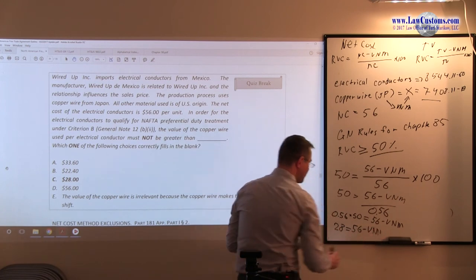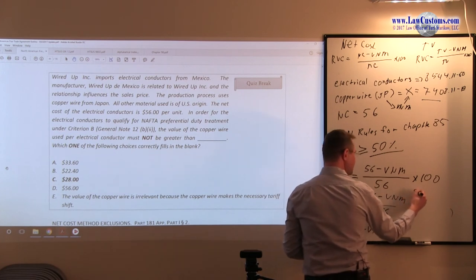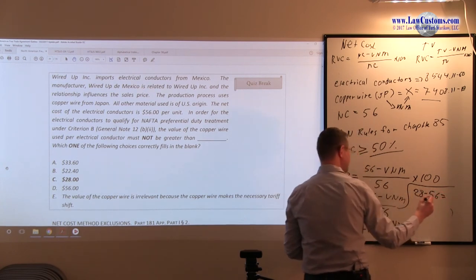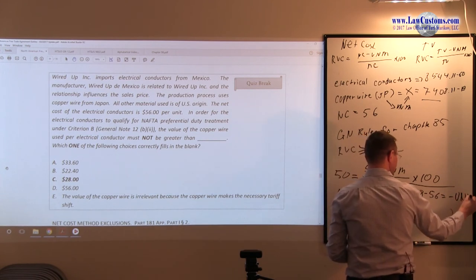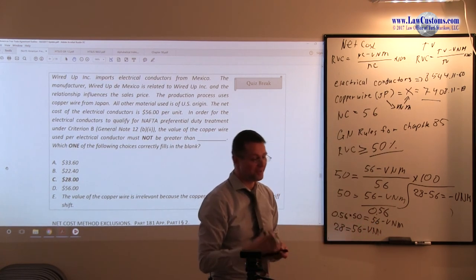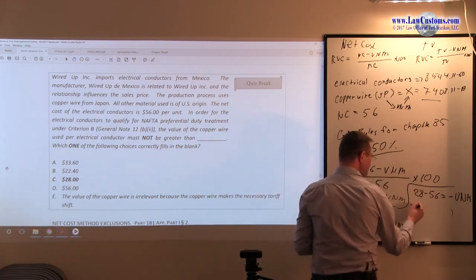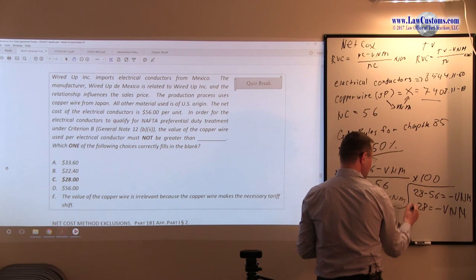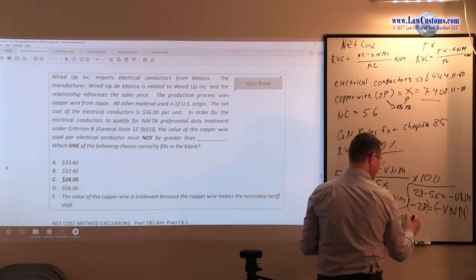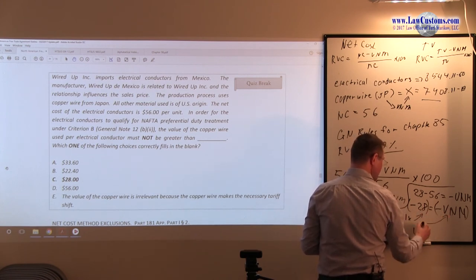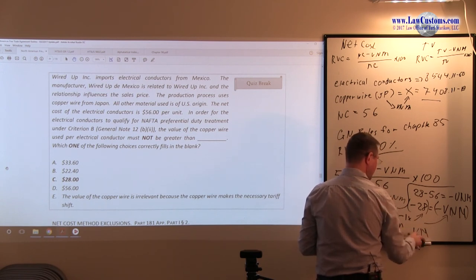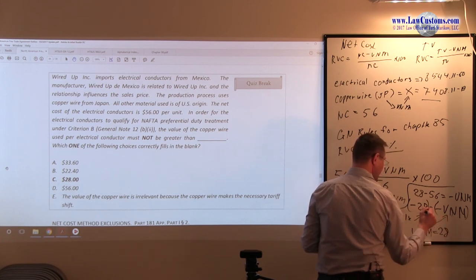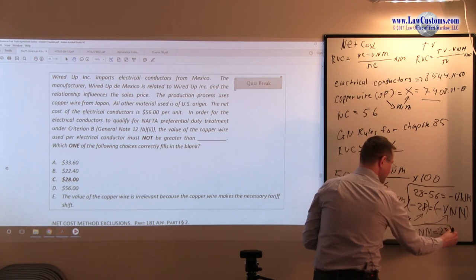Now you bring this over to the other side, so this would be 28 minus 56 equals negative VNM. And 28 minus 56 is negative 28, so we would need a calculator. It would be minus 28 equals minus VNM. We multiply this by negative 1, apply this to here and this to here, and VNM will get the value of 28. So this would be the final answer, VNM equals 28.